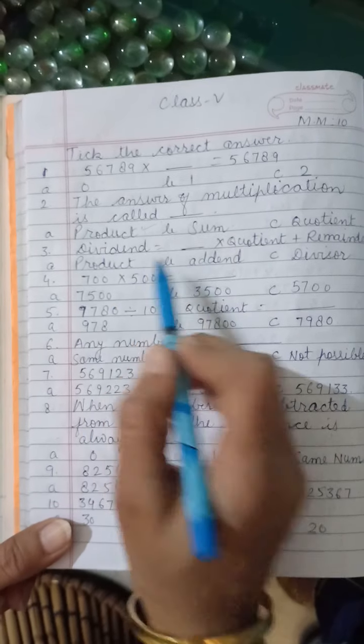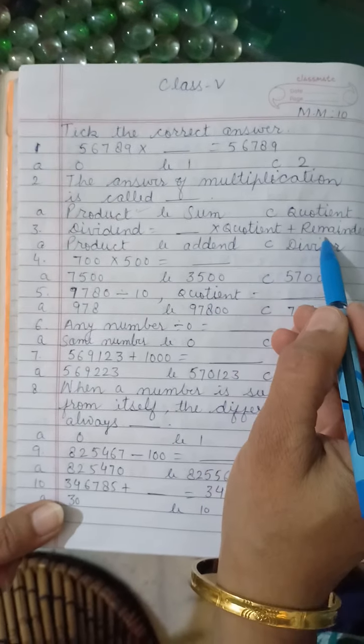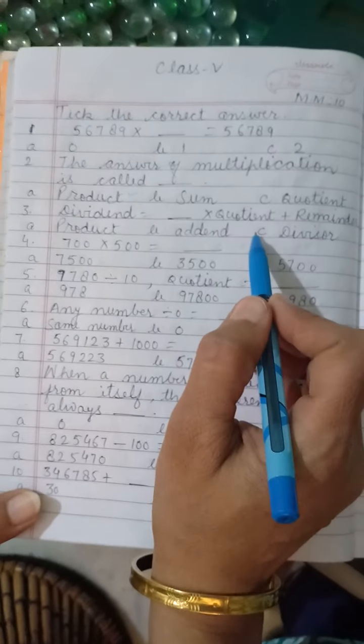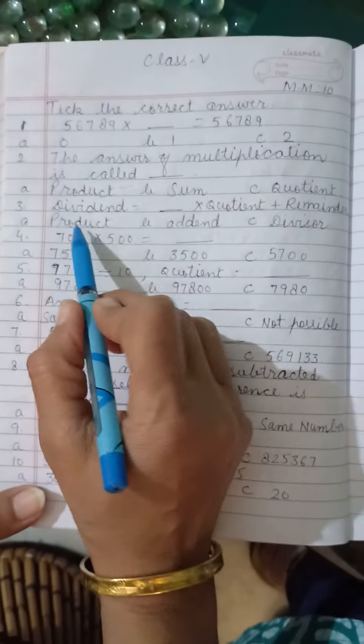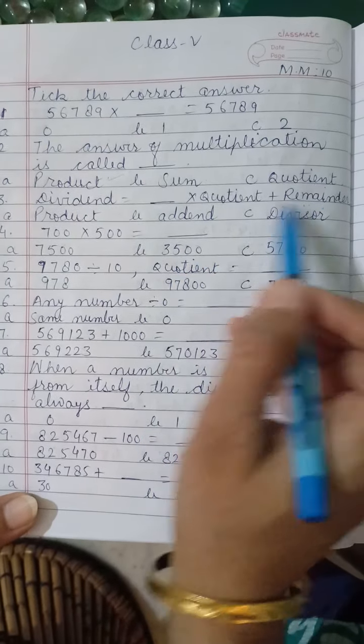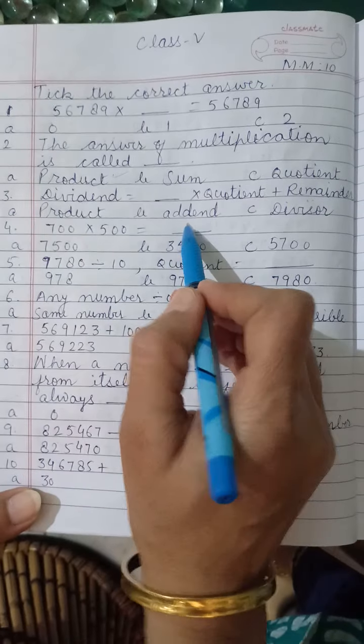Dividend is equal to dash multiplied by quotient plus remainder. This is the verification formula of division sums that we have done already. Dividend is equal to divisor multiplied by quotient plus remainder. Then this is product, this is addend. This is the correct answer for it.